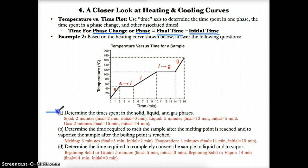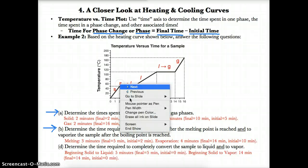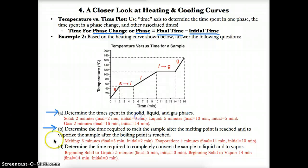For time spent in solid, liquid, and gas phases, you just have to isolate the solid, the liquid, and the gas phase and find the changes in time. For a question where you have to find the time required to melt a sample or to vaporize the sample, you just have to isolate the phase changes and subtract the final and initial times for that phase change.